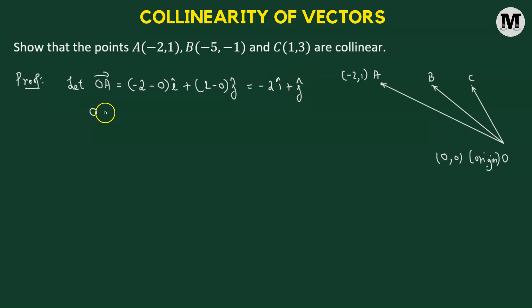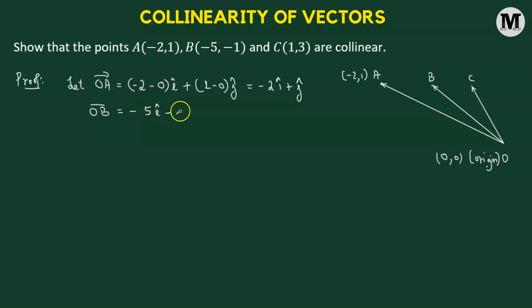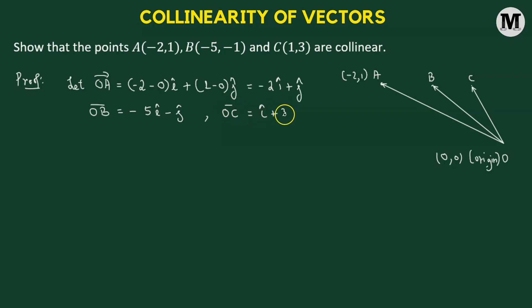Similarly, we can define the position vector of point B. OB vector comes out to be negative five i-cap minus j-cap. And OC vector comes out to be i-cap plus three j-cap.